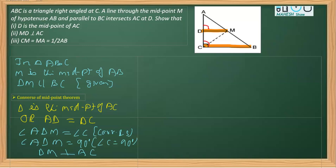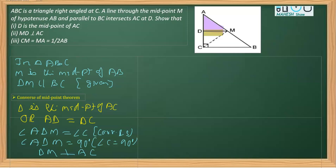In the next part, we have to prove CM is equal to MA is equal to half of AB. For proving CM equal to MA, we need to prove two triangles as congruent. The triangles we'll consider are triangle ADM and triangle CDM.